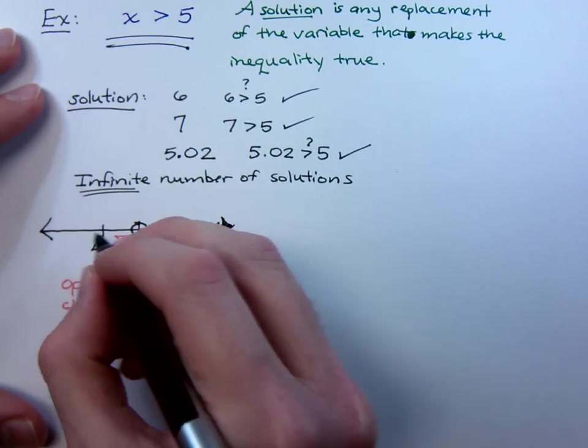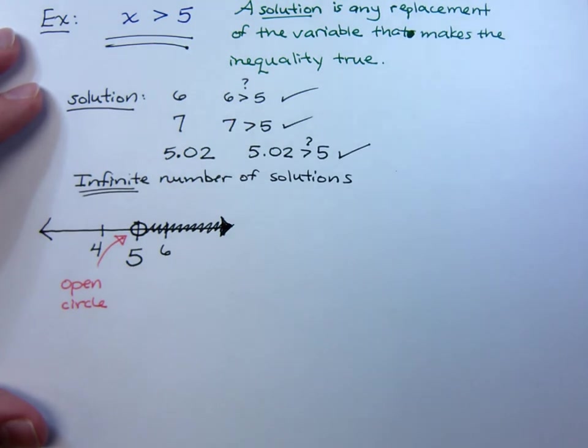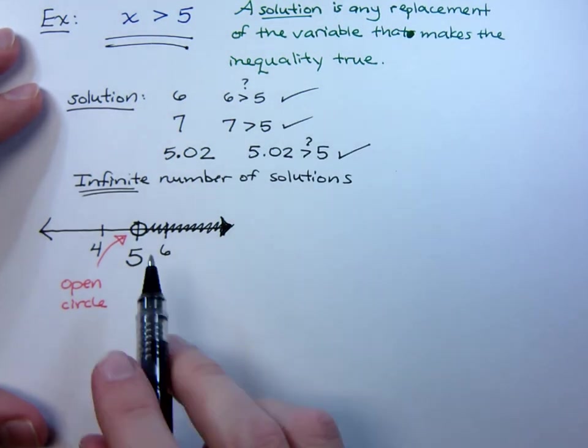Out to the left you would have 4, 3, 2, 1, and all those fantastic numbers that are less than 5. So, in this example, I'm really concerned with those values that are greater than 5.